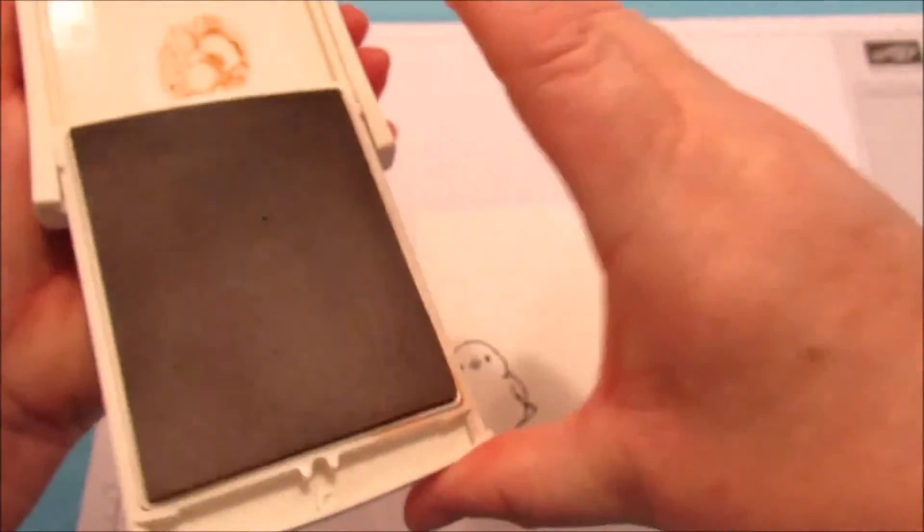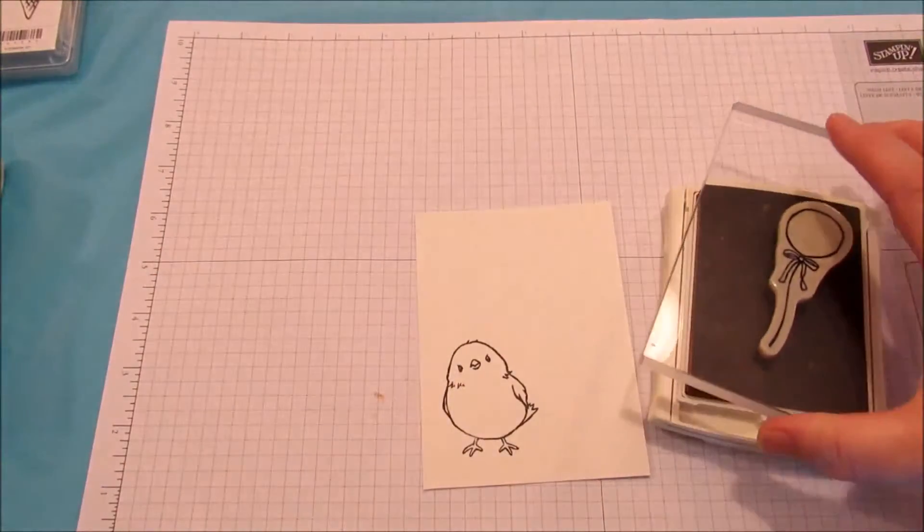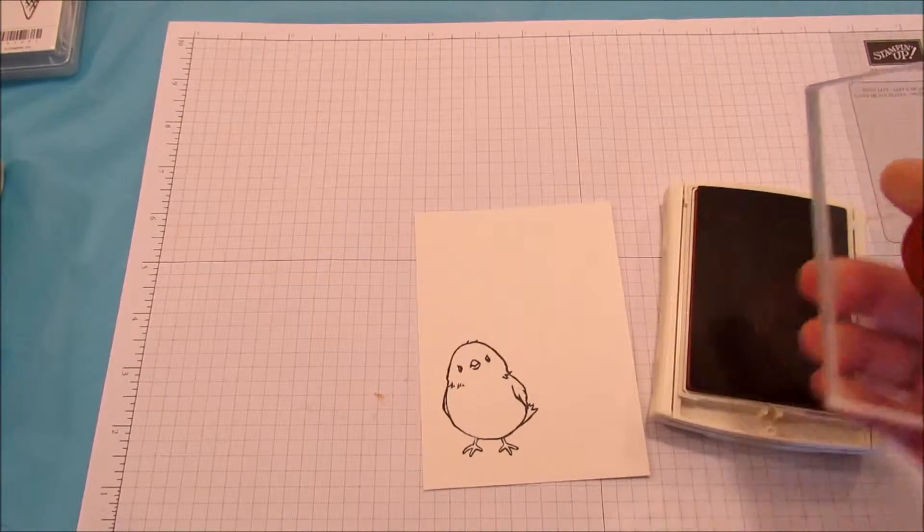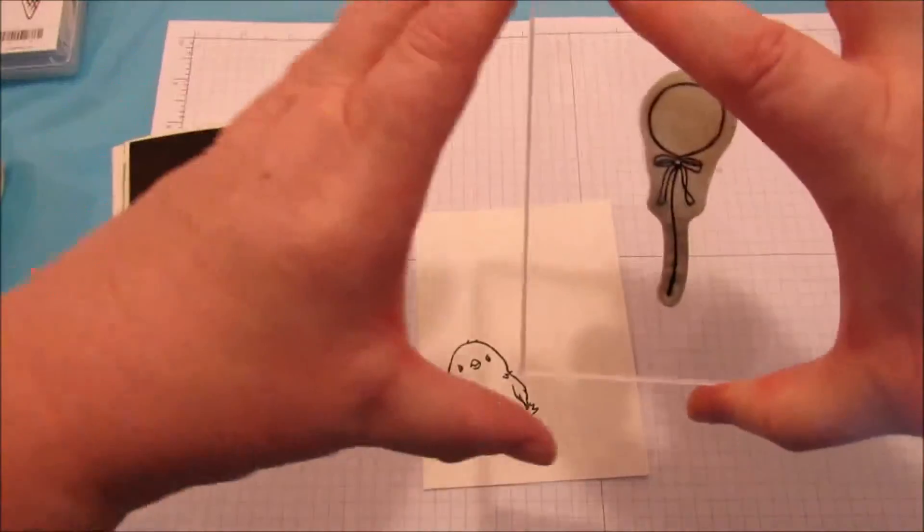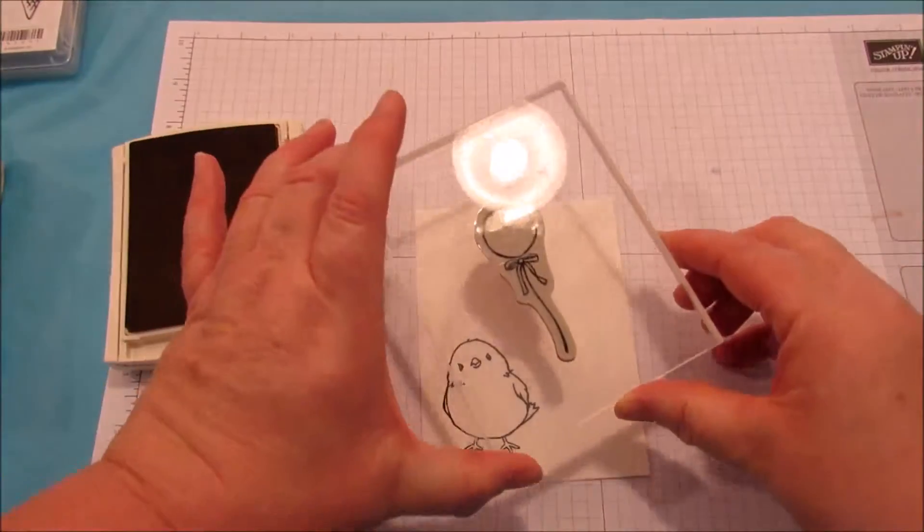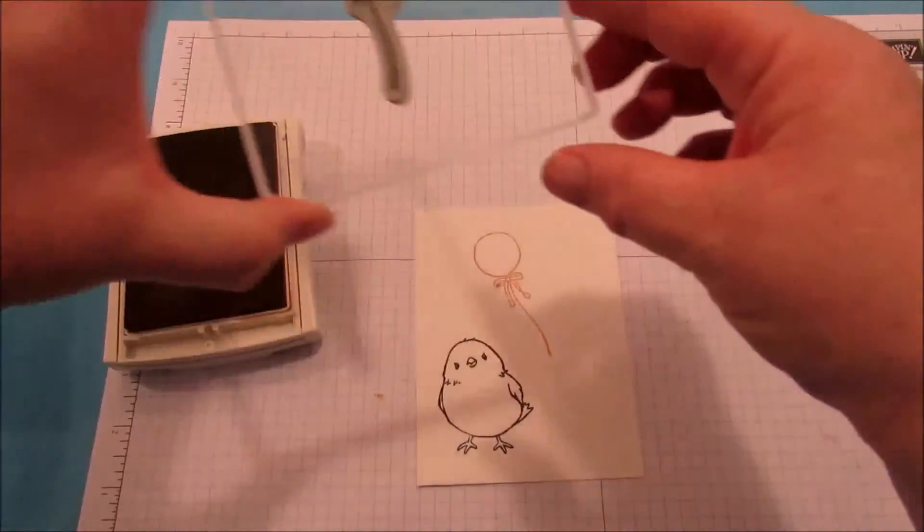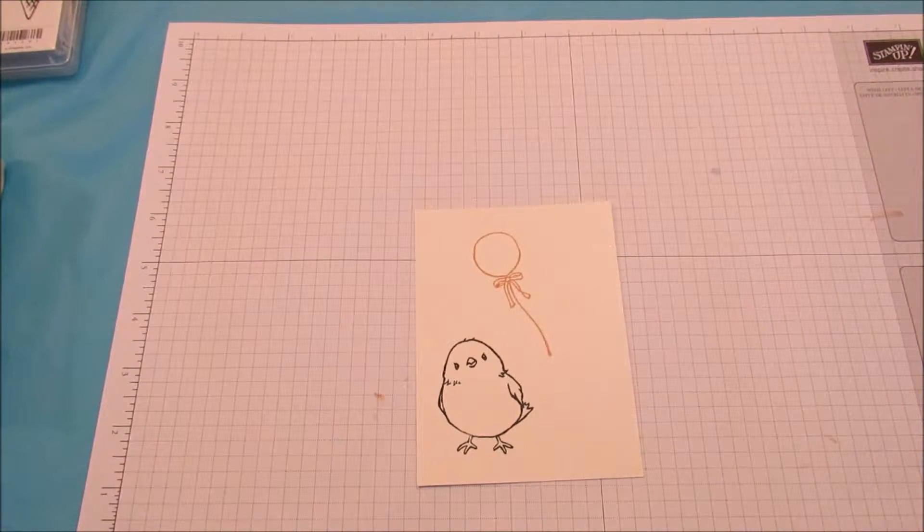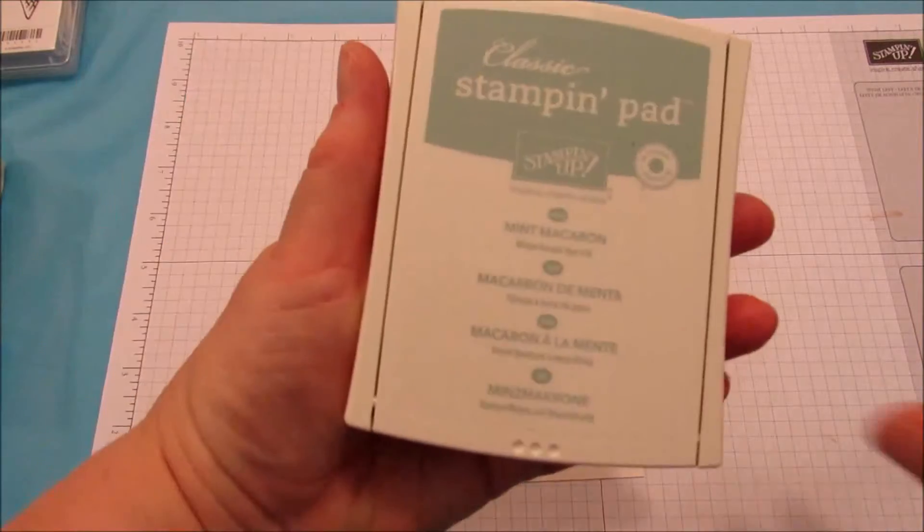Balloon stamp, we're going to do that in the Blushing Bride, which is this color here. Ink that up good. Tap it lightly. This is a little juicy, these pads. So give it a nice little jump. I'm going to place that like so. Great. And then I'm going to clean it off. And then we're going to do the same thing with the mint macaron.